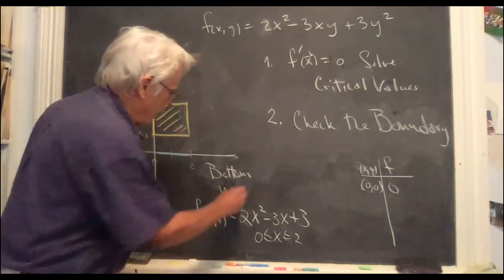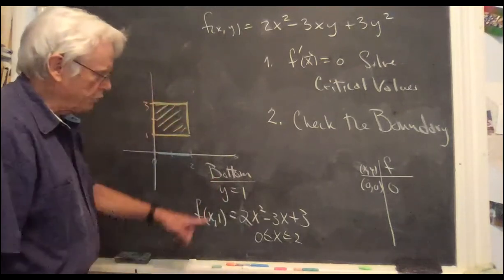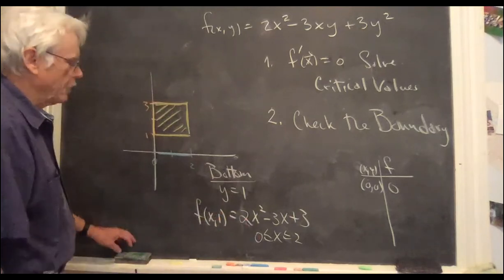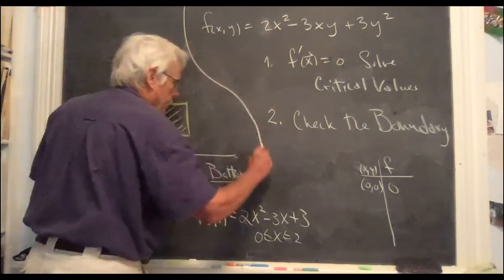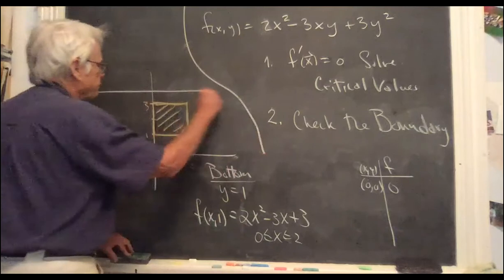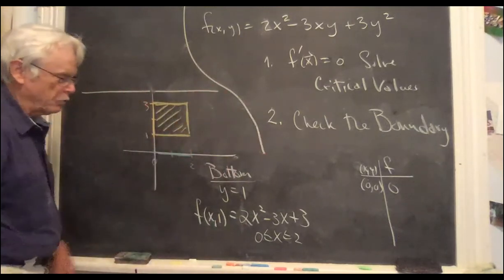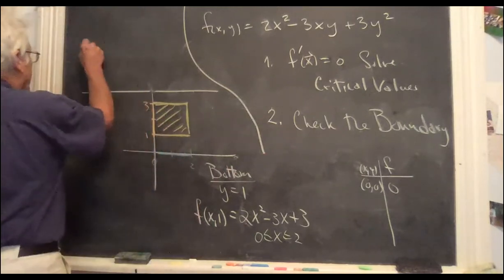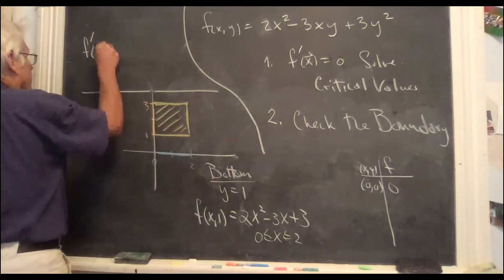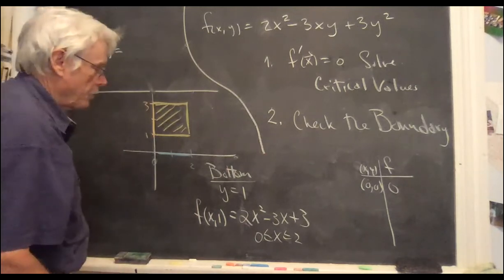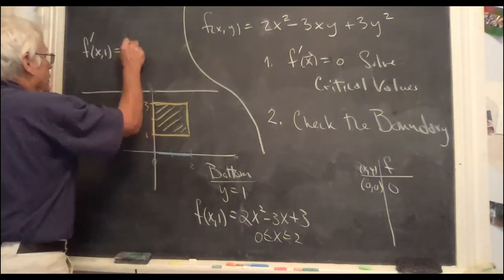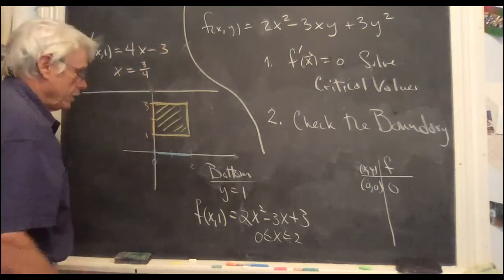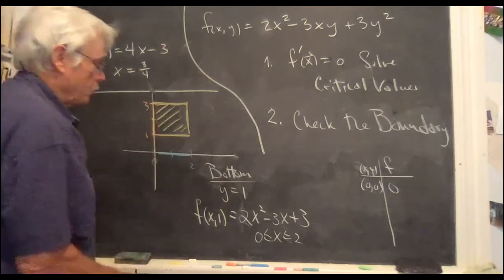Because the boundary will be one-dimensional. But for this bottom, we have a one-dimensional problem. Find the maxes and mins of this thing on this interval. And I'm going to move up a little bit and do that. To find the maxes and mins of a one-dimensional function, you take the derivative and set it equal to 0 and solve. So f prime of x1, and there is only one variable here, is 4x minus 3. So x equals 3 quarters. Needs to be checked. The y value is 1.